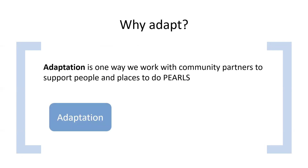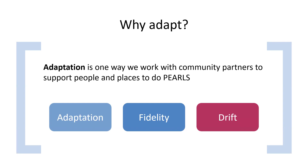Let's start with some definitions. Adaptation is a modification to the PEARLS program or delivery, which can be planned or unplanned. It's important that adaptations are consistent with fidelity to the original PEARLS model. Fidelity is the degree to which PEARLS core elements or functions are done as intended. Drift is when an adaptation is in conflict with fidelity. What we do at our center is partner with organizations like yours to make appropriate modifications to the program or how it's delivered, to better meet the communities you serve and the organizations where you work while maintaining consistency with the key pieces of what makes PEARLS work.